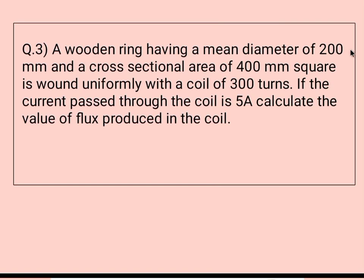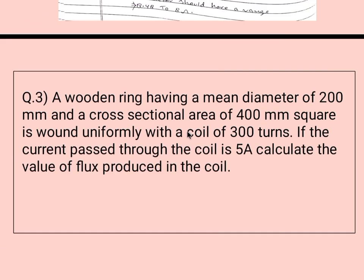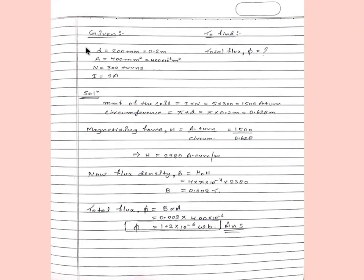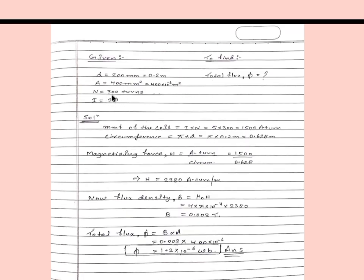Moving to the last question: a wooden ring having a mean diameter of 200 mm and a cross-sectional area of 400 mm squared is wound uniformly with a coil of 300 turns. If the current passed through the coil is 5 ampere, calculate the value of flux produced. Given: D equal to 200 mm (0.2 m), area equal to 400 mm squared (400 times 10 to the power minus 6 m squared), N equal to 300 turns, I equal to 5 ampere. We need to find total flux.